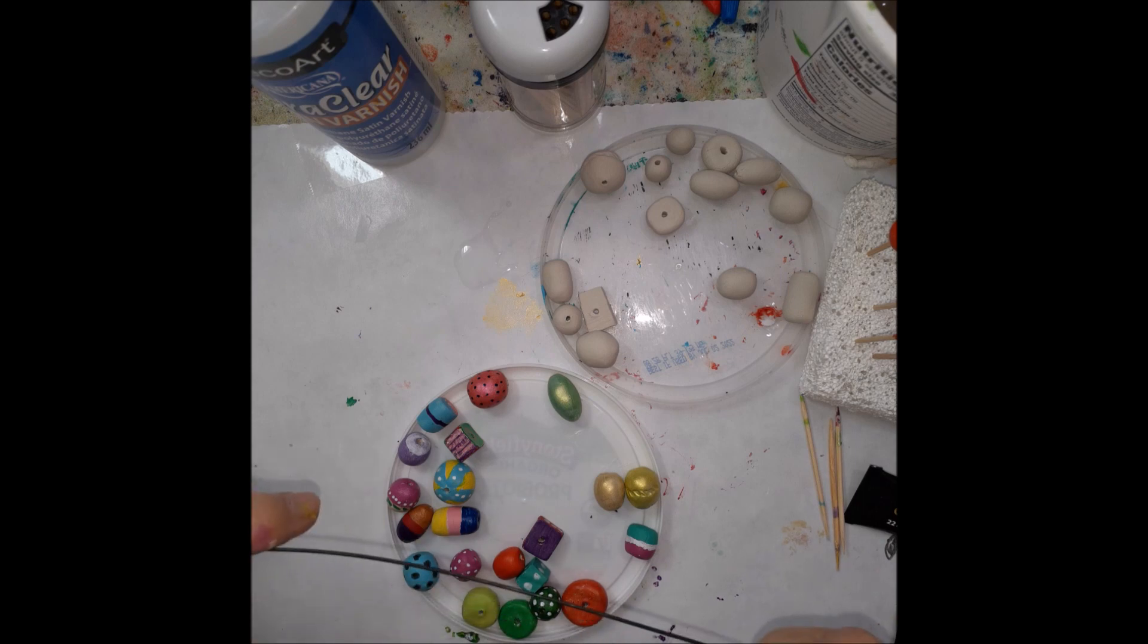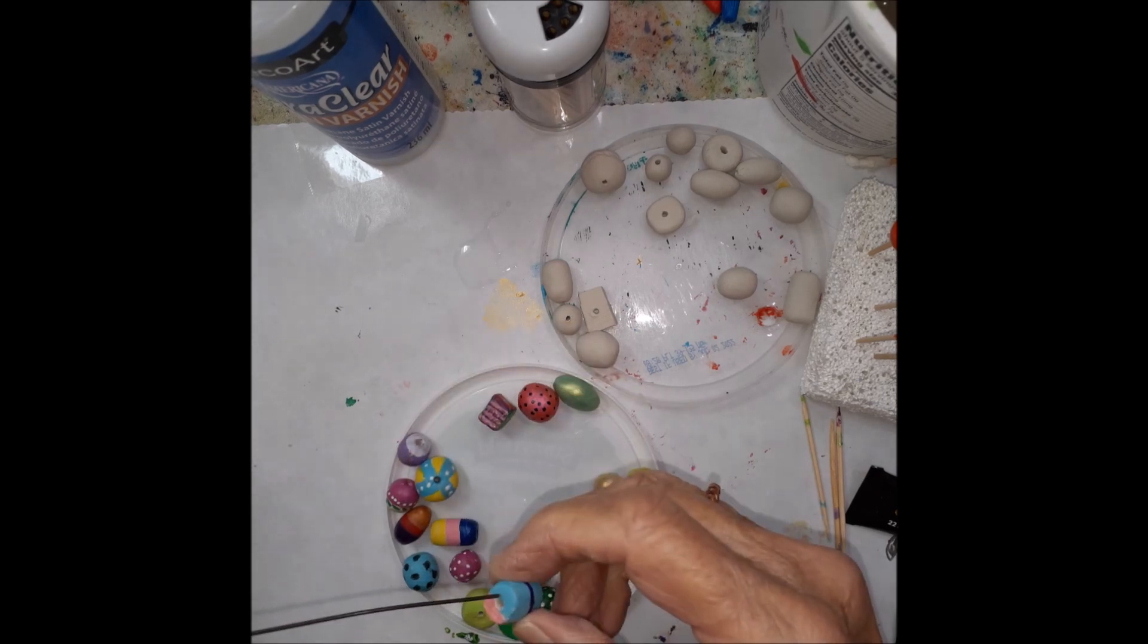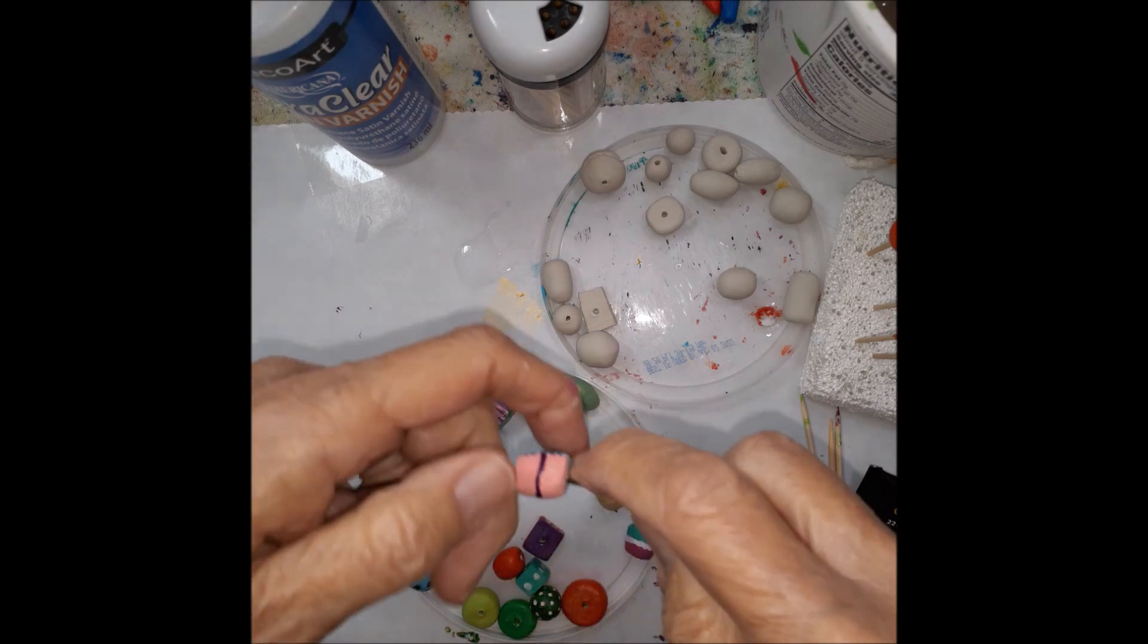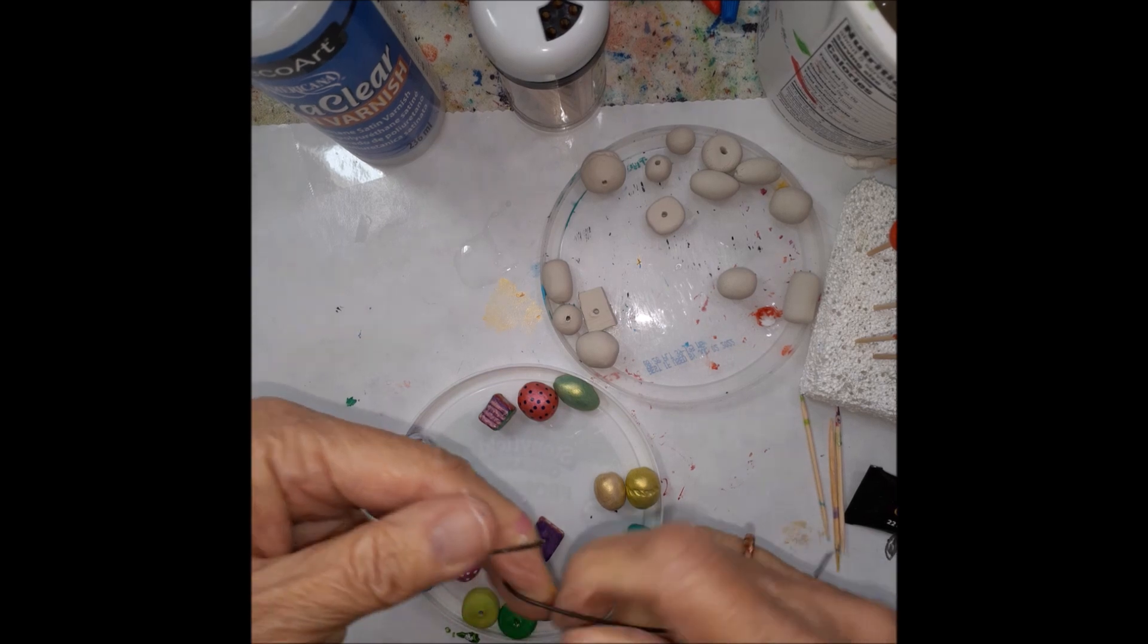You want to start, say you want to put a bead at the top like that, and then you want to make a loop. You can do it around your finger.